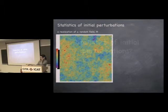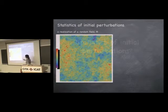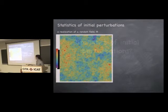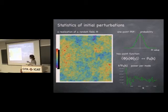So what do I mean by the statistics of the initial perturbations? Here's an example. This panel shows a realization of some random field phi — you can think of this as the initial curvature. This color band shows positive and negative fluctuations of this field. One way to quantify the statistics is to histogram the values of the field at every point, and you get a probability distribution function, which in this case is Gaussian. Another thing you can do is measure the two-point correlation function or the power spectrum, which says: what's the typical size of fluctuations on a given Fourier scale? If this field is Gaussian, then this is all of the information you need to quantify the statistics.